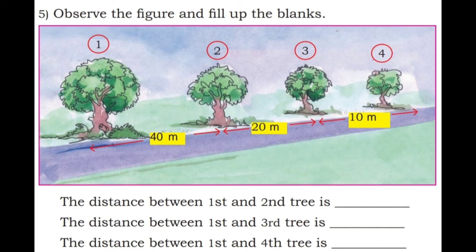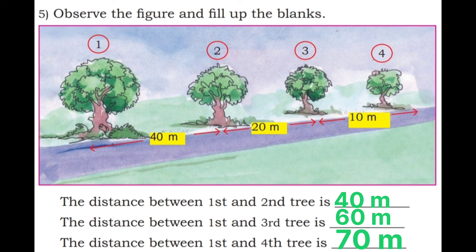Fifth problem: Observe the figure and fill in the blanks. The distance between the 1st and 2nd tree is 40 meters. The distance between the 1st and 3rd tree is 40 + 20 = 60 meters. The distance between the 1st and 4th tree is 60 + 10 = 70 meters. This is Exercise 11.3. See you in the next exercise.